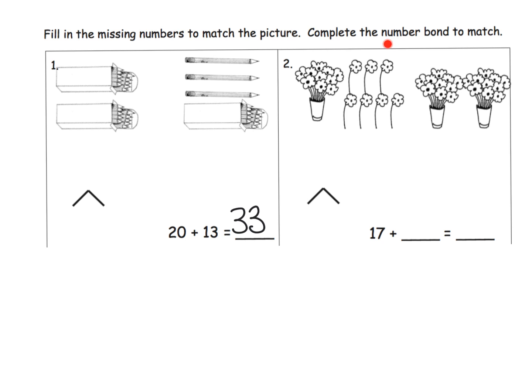Now, how might that look in a number bond? Well, we might write it like this: 20, 13, and 33. Keeping in mind the commutative property, we could have put the 13 here and the 20 over here, but the 33 needs to go up on top.